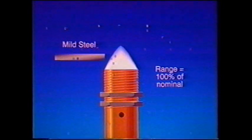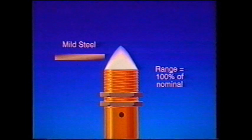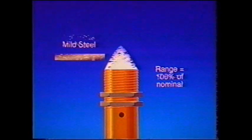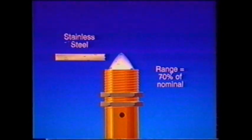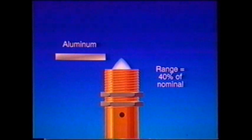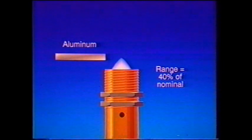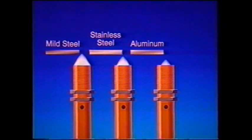The turn-on, turn-off graphs we saw earlier were based on a mild steel target. When the target is not steel, the graphs for the switch will be different. With a stainless steel target, the maximum sensing range will only be about 70% of the nominal range. And with an aluminum target, the actual sensing range will be only about 40% of the nominal range. Remember to correct for the material, and then have the switch operate at 50% of that range.